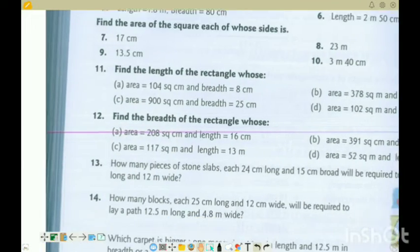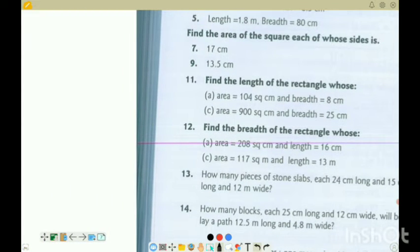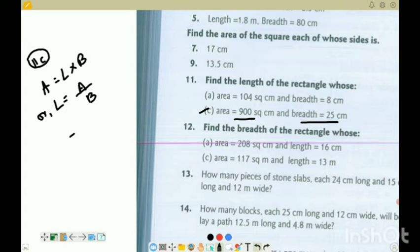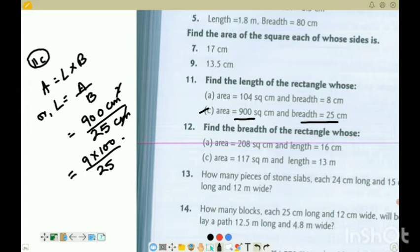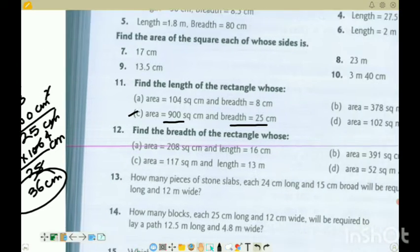11c: area is 900, breadth is 25. Area is equal to length into breadth, and length is equal to area by breadth. Area is 900 centimeter square divided by breadth which is 25 centimeter. 1 centimeter cancels out. Final answer: 9 into 100 divided by 25. 25 goes into 100 four times, and we have 9, so 4 times 9 equals 36. So 36 centimeter is my length.